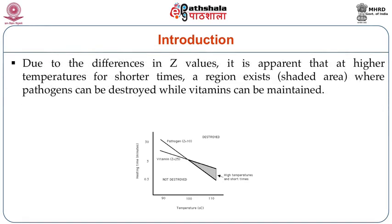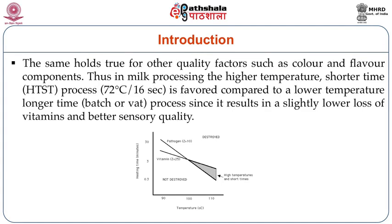Due to the differences in Z values, it is apparent that at higher temperatures for a shorter period of time, there is a region which exists — as you can see, the shaded region. This is the region where pathogens can be destroyed while vitamins can be maintained. The same holds true for other quality factors like color, flavor, and other components.